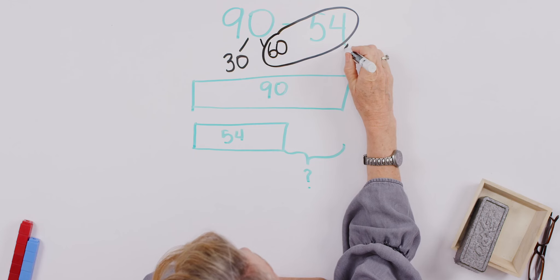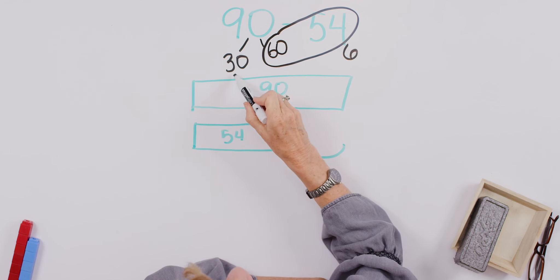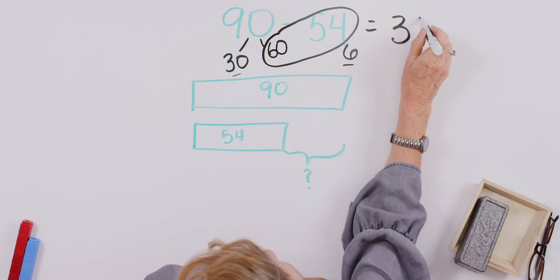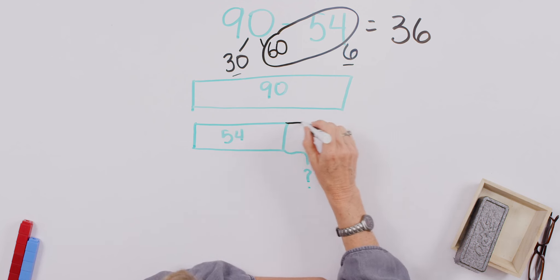I think 10 minus 4. That gives us a 6. Now, remember, we put these two together. The difference between 90 and 54 is 36.